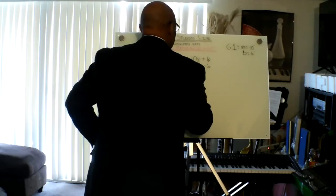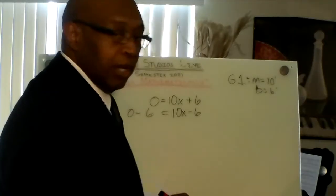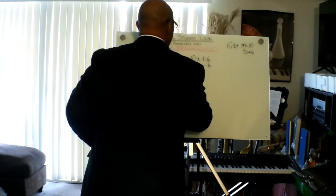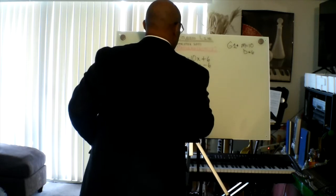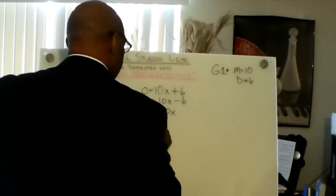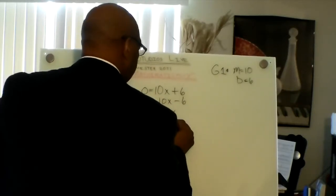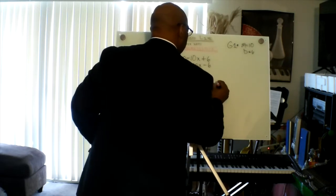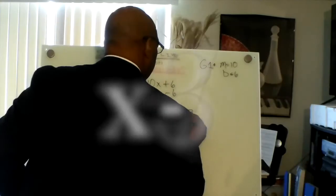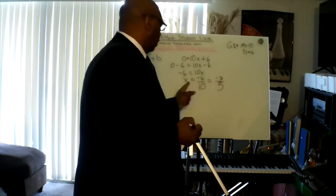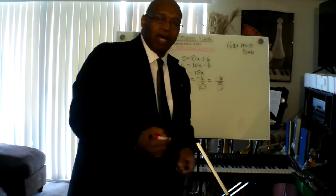We need to subtract 6 from both sides. Then x minus 6 equals 0, negative 6 equals mx. We have x equals negative 6 over 10, which reduces to negative 3 over 5. x equals negative 3 over 5.